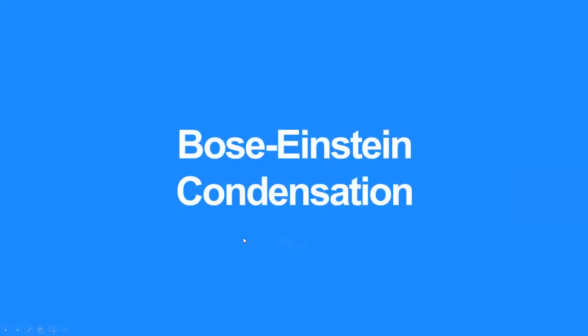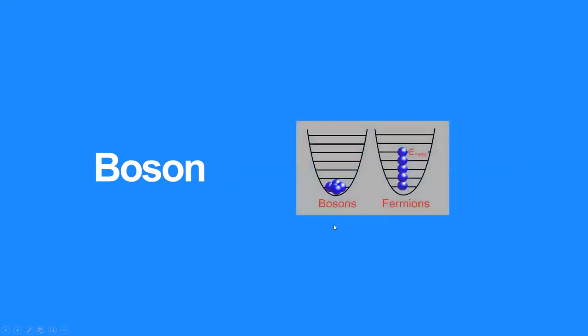Now, before we go over Bose-Einstein condensation, we need to understand the concept of Boson. Boson is one of two elementary particles, the other being fermion. Boson has unique property compared to fermion. As you can see in this figure, multiple Bosons can exist in the same quantum state, while fermion cannot.